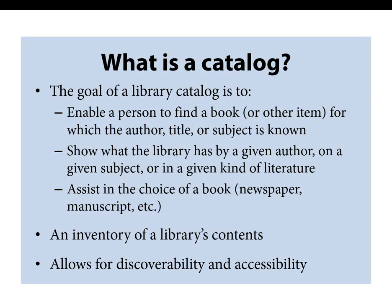So to begin with, what is a library catalog and why do we have them? These are the goals of a library catalog: to enable a person to find a book or other item for which the author, title, or subject is known; to show what the library has by a given author or on a given subject; and to assist in the choice of a book, newspaper, manuscript, or other item. These rules were laid out almost 150 years ago by Charles Cutter and are still relevant today. Simply put, a catalog serves as an inventory of a library's contents.